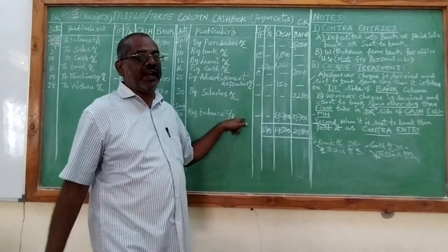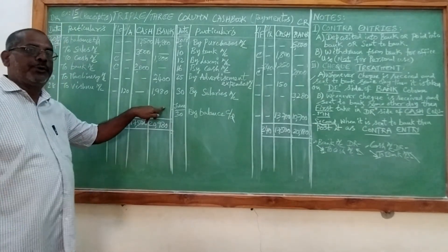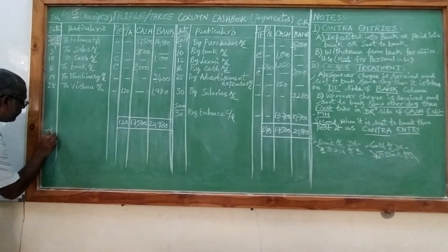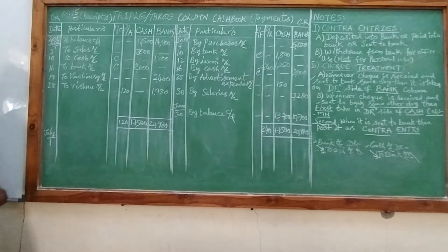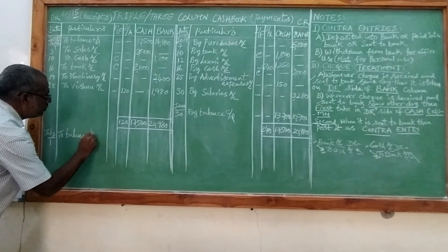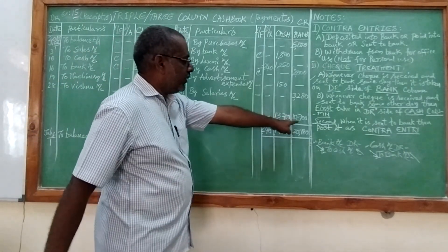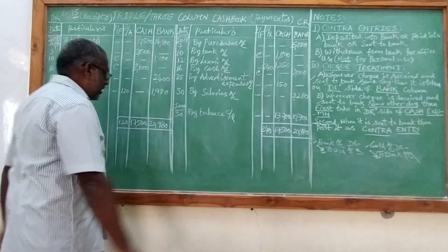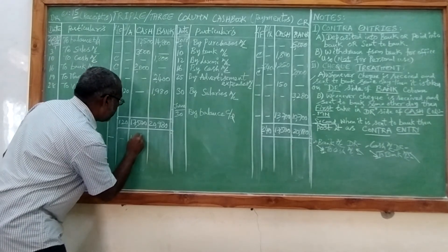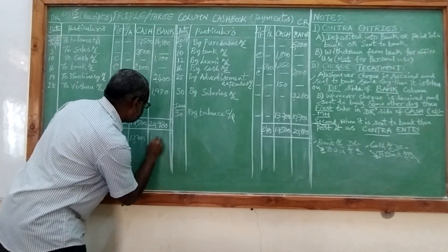This is in regard to the month of June. We will have the closing day of the month, that is June 30th. We take 'by balance carried down' — so 30,700 is in the cash account as closing balance for the month of June, and 10,700 is in the bank as closing bank balance. These closing balances will be carried forward to the next month's opening day — July 1st — with balance brought forward: 30,700 and 10,700.